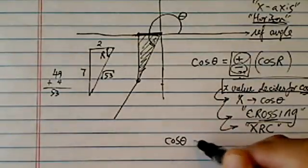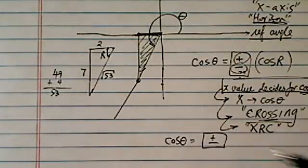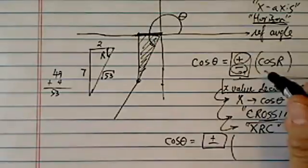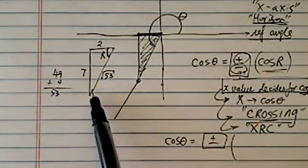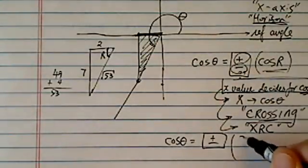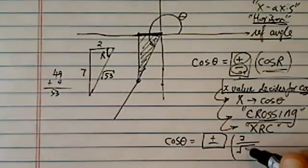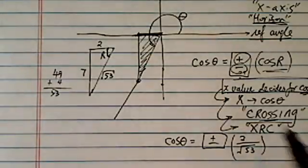cosine theta, let's put our minus plus, we don't know yet. Cosine R, that's pretty easy, because we have this triangle over here. Cosine R is 2 over radical 53. Now we're going to decide,